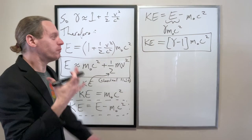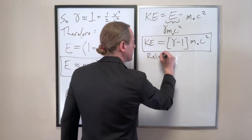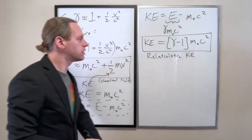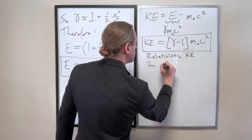And again we can just do a quick check. So this should be our generalized relativistic KE. And so let's check it here in the classical limit again.